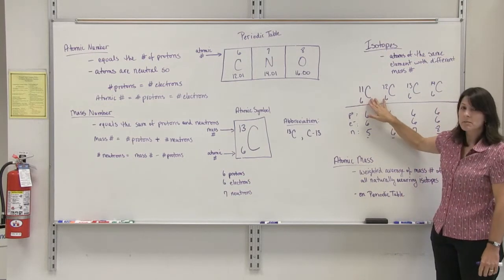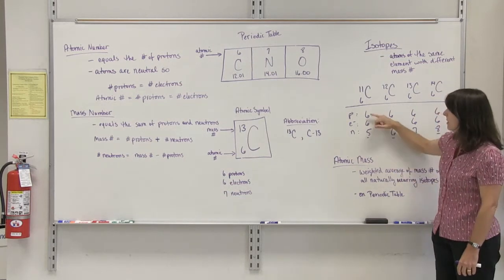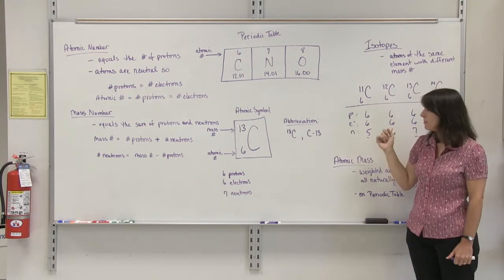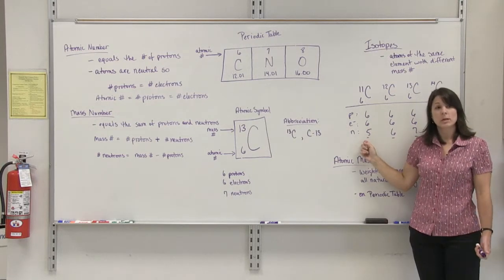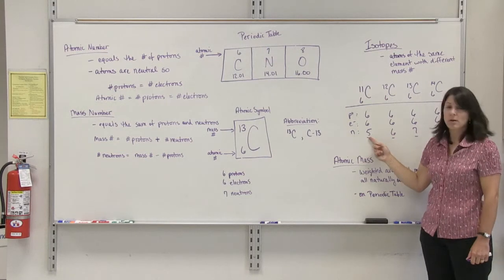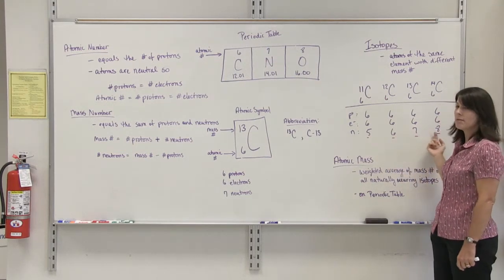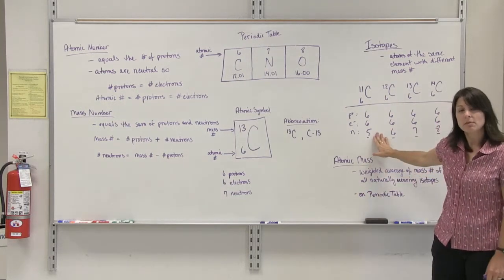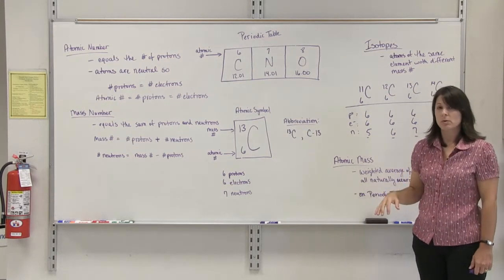From these atomic symbols, we can determine the number of protons, electrons, and neutrons. Protons and electrons are going to be the same for every single one of these isotopes of carbon because the atomic number is the same — it's 6. The number of neutrons is what differs. So if you subtract 6 from 11, you have 5 neutrons. In the next isotope, 6 neutrons; then 7; then 8. So the only thing that is different in different isotopes of the same element is the mass number, or the number of neutrons.